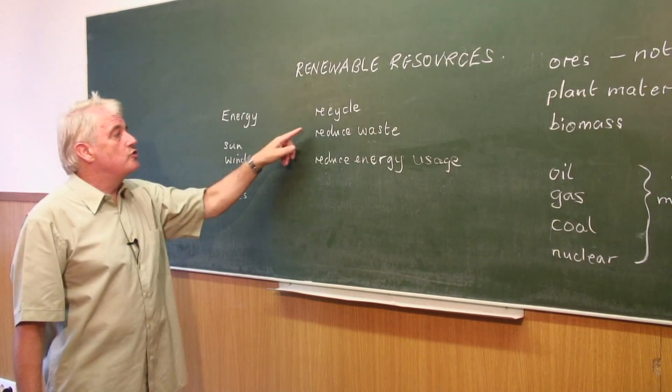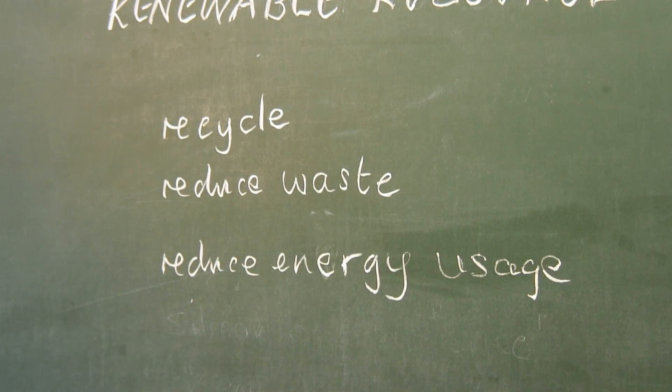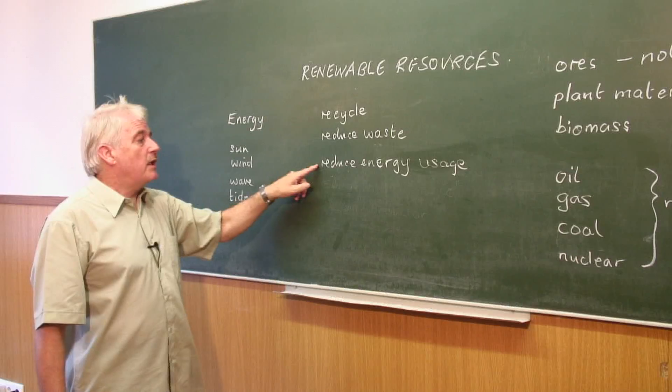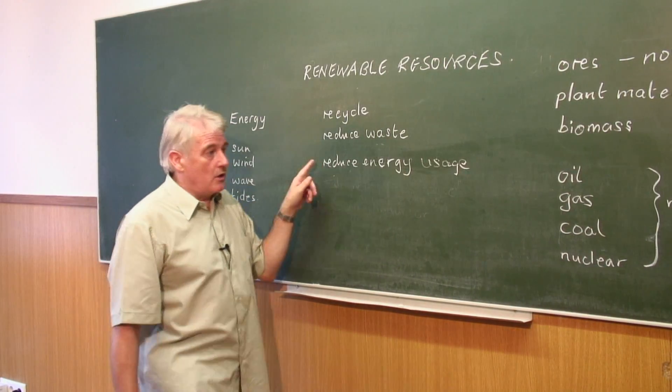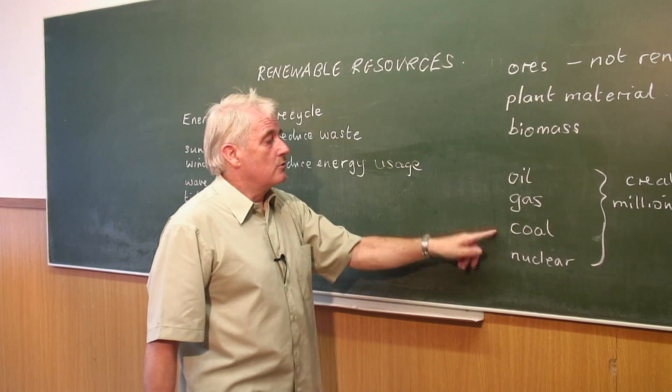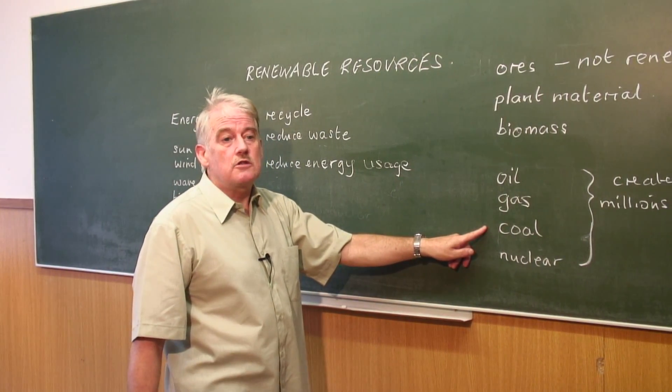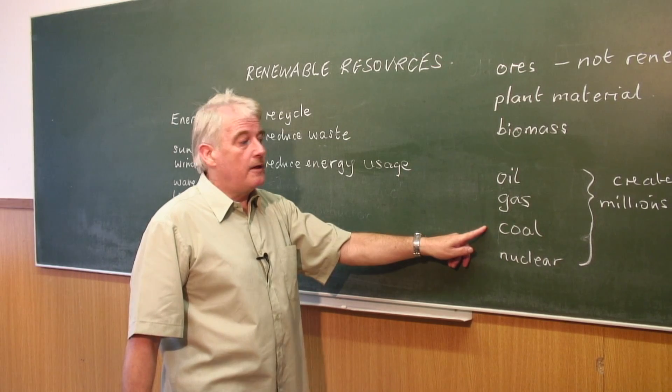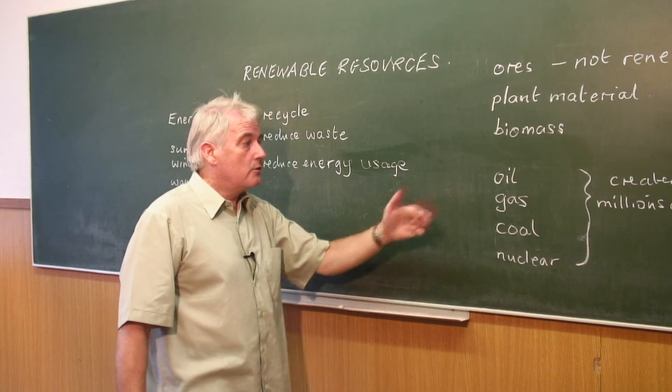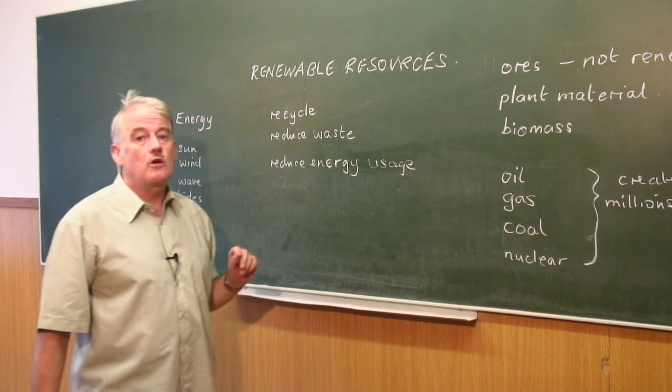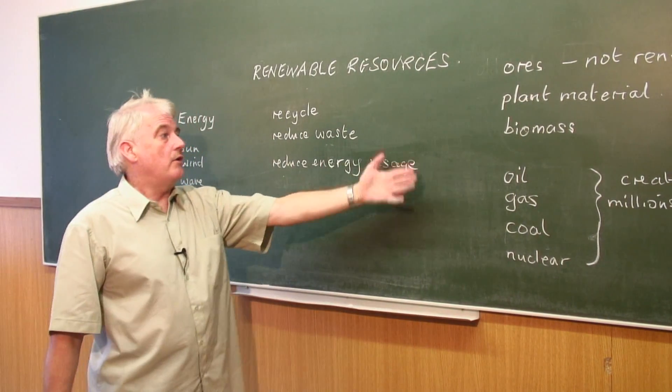We have to reduce waste, recycle, and reduce energy usage. These resources are basically burnt to produce energy. If we can reduce the amount of energy we use, we can reduce the rate at which these are used up on Earth.